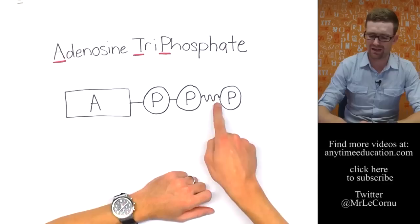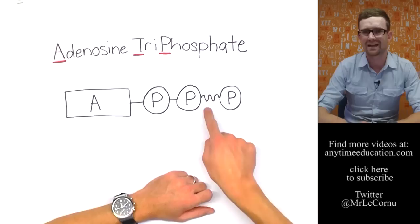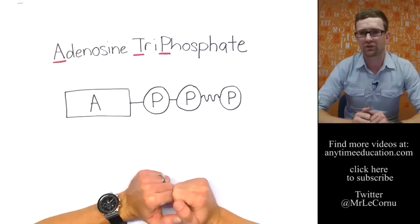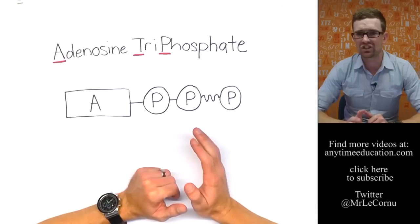Now the third phosphate, I've drawn a squiggly line there to indicate that that is an unstable bond. That bond can be broken and ATP can be converted into ADP diphosphate and an extra phosphate group. When that happens, energy is released.